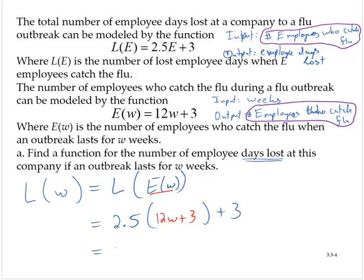The distributive property gives us 30W + 7.5, and then plus 3, so that would be 30W + 10.5.